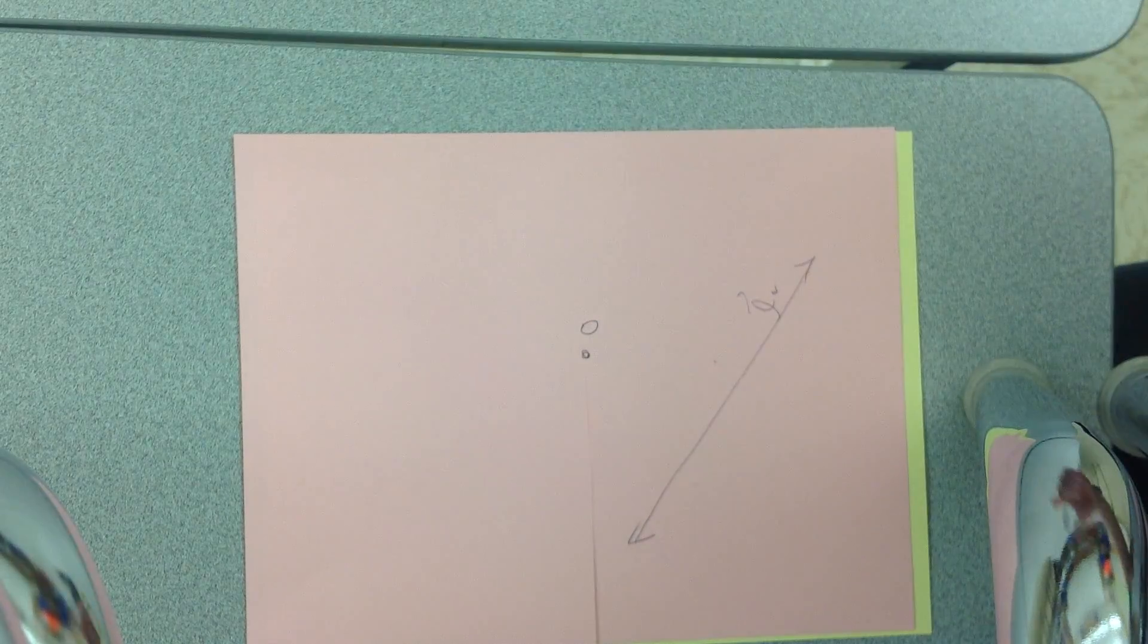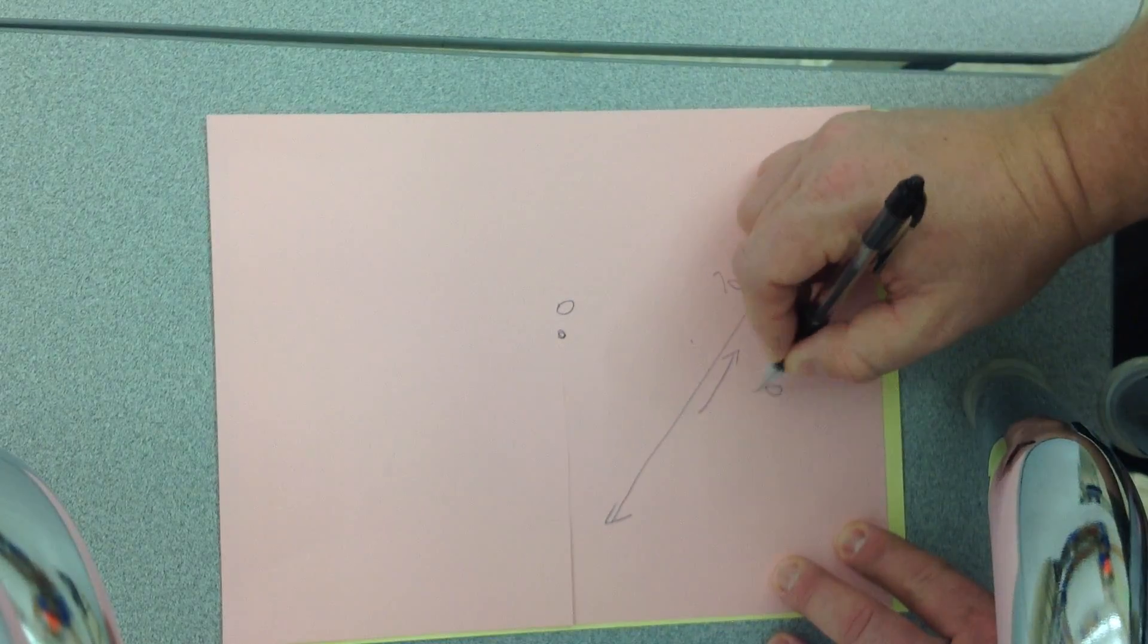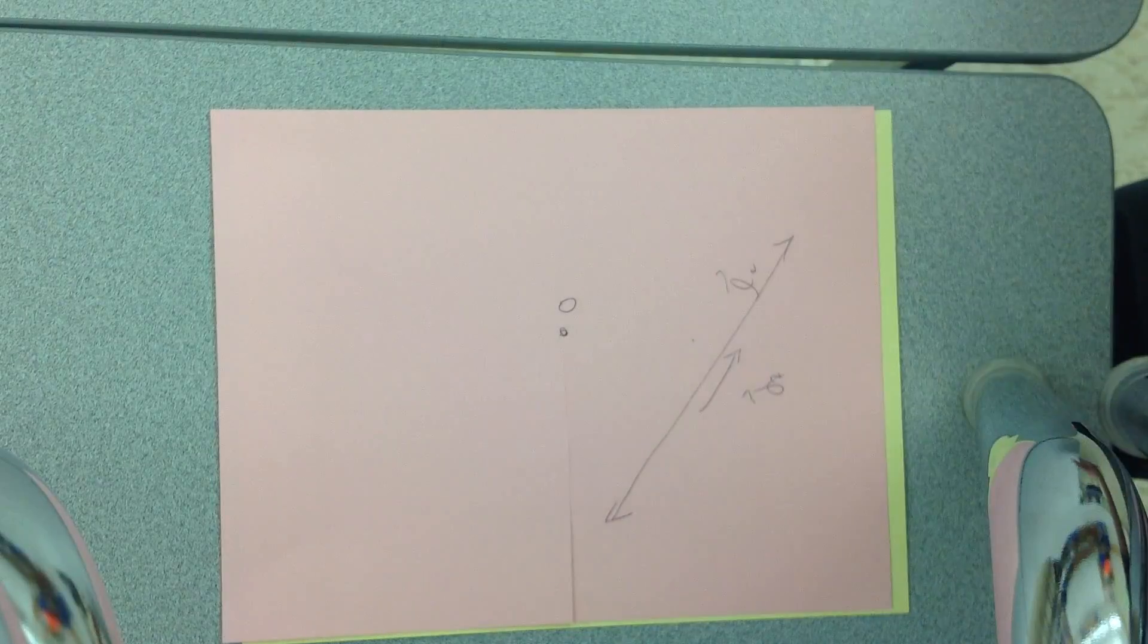So to find the equation of the pink plane, the pink piece of paper, it's the same thing. I'm going to use the direction vector from this line.